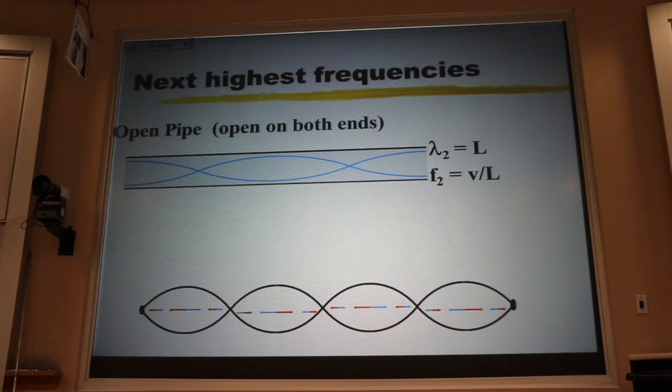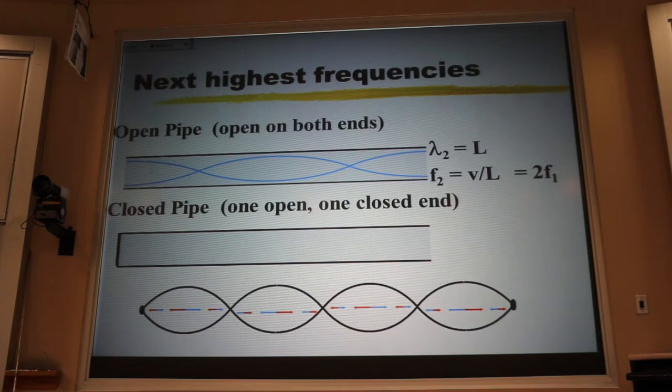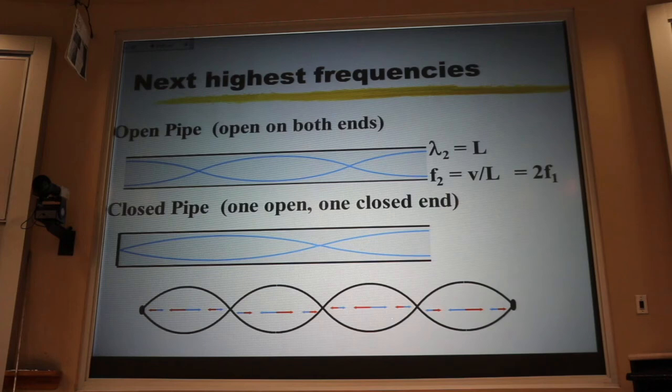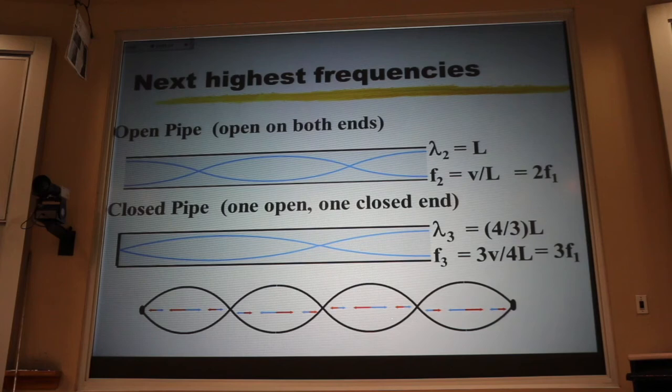If, on the other hand, I have a closed pipe—by that I mean closed at one end—I still have to add one football. But I started with half a football, and so now I tripled the number of footballs. I went from a half to three halves. If I triple the number of footballs that fit in the same space, my footballs have to get smaller by a factor of three. That means the frequency is bigger by a factor of three. I've gone to the third harmonic.